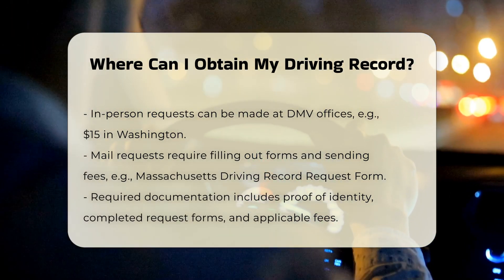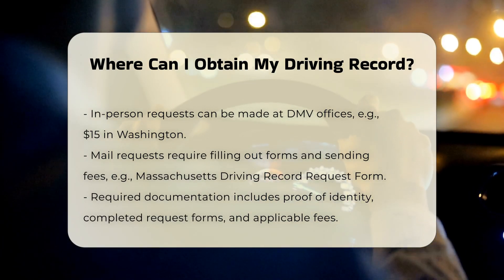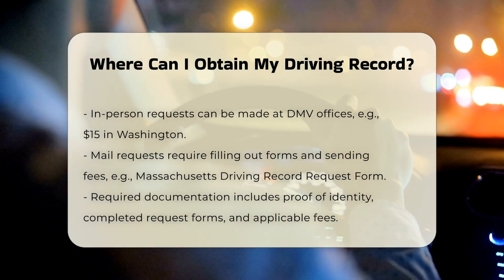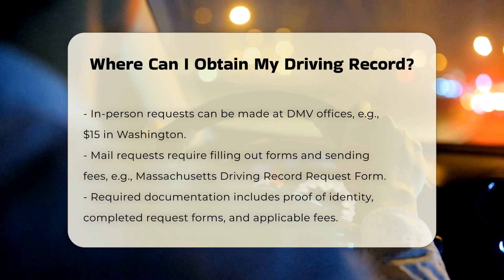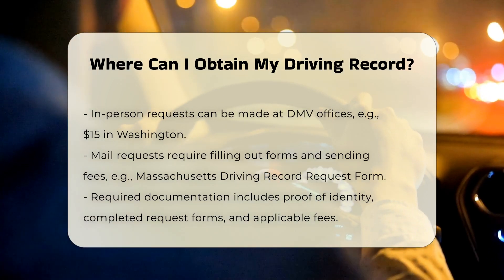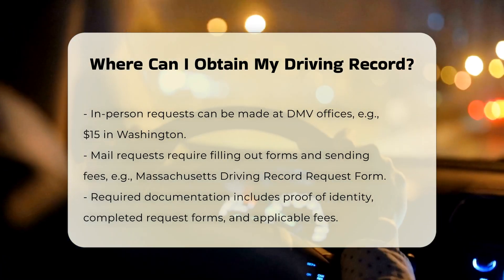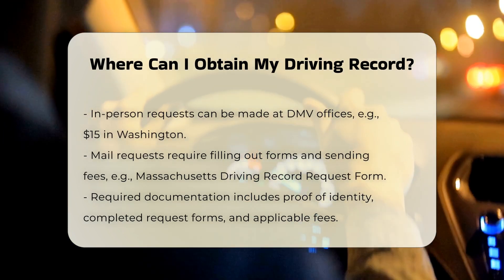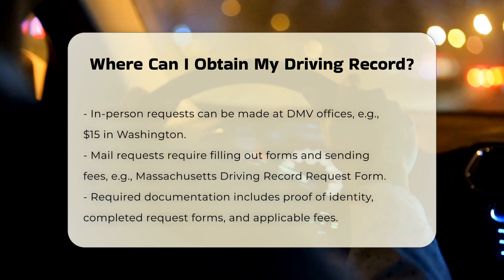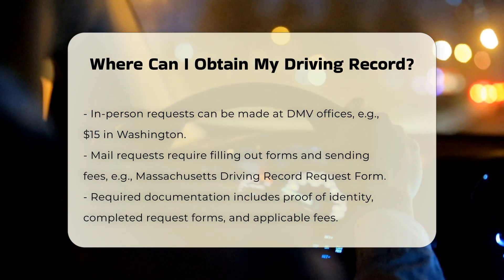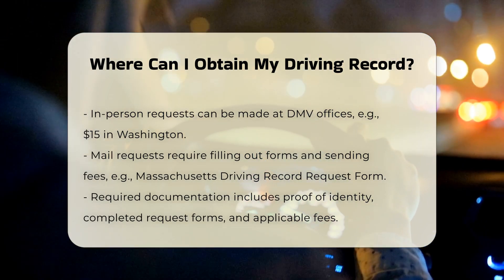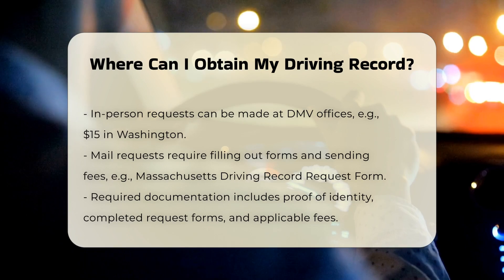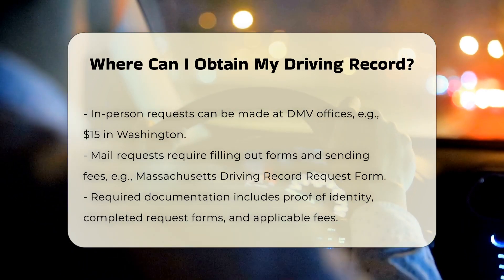Required documentation: when requesting your driving record, you typically need to provide specific documentation. Identification — proof of identity, such as a driver's license, permit, or non-driver ID card. Forms — completed request forms, which may vary by state. For example, in California, you need to fill out the request for your own Driver's License Identification Card (DLID) or Vehicle Vessel Registration Information record, INF 1125.